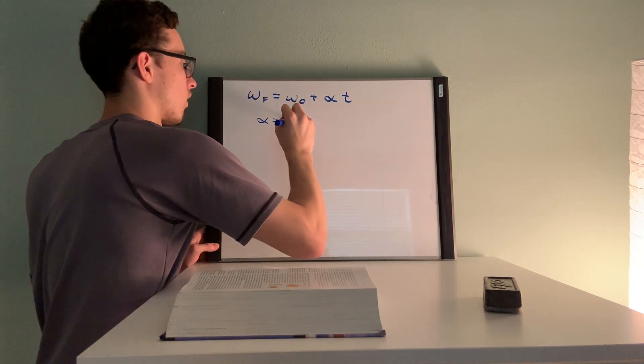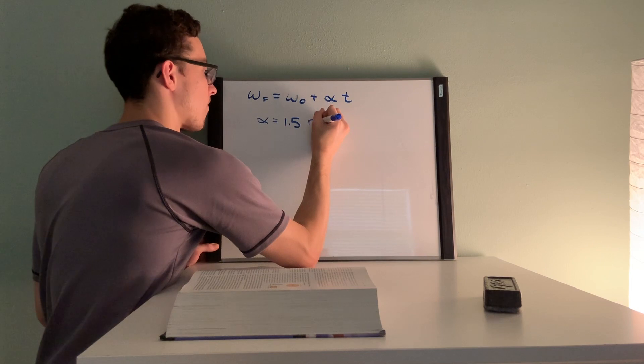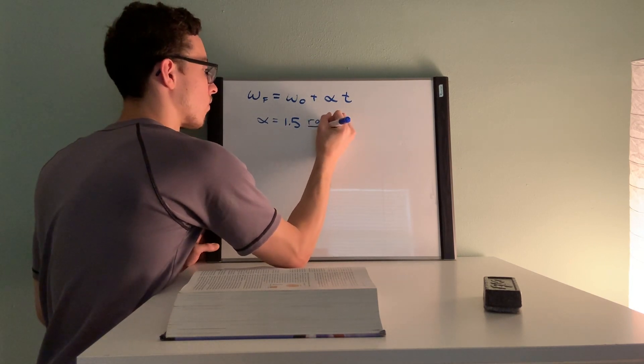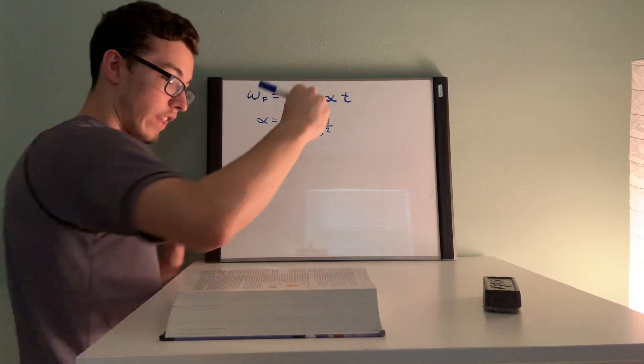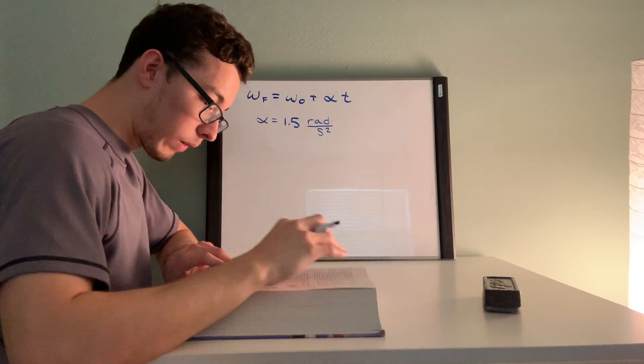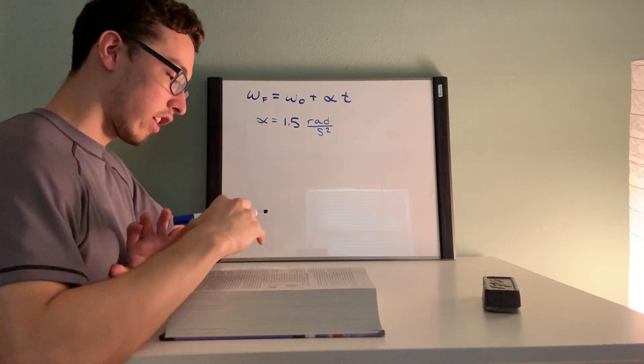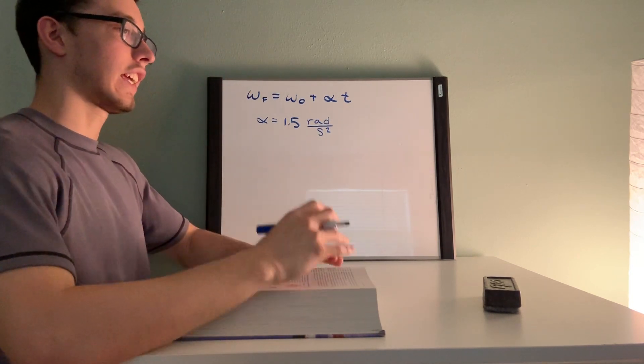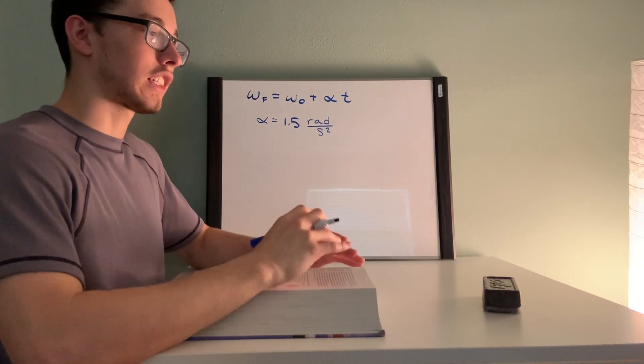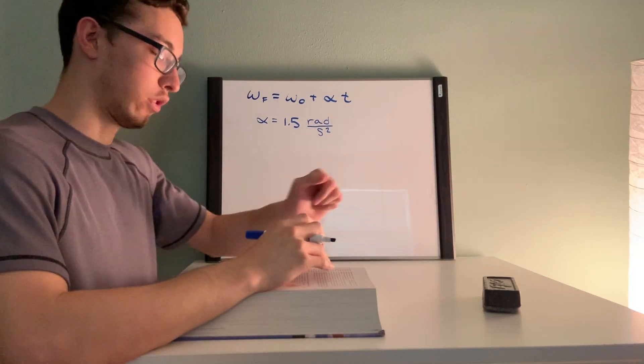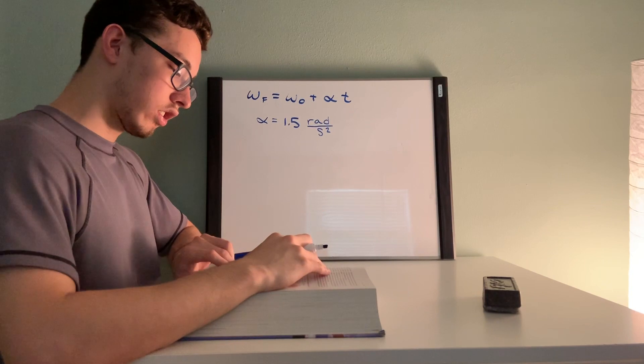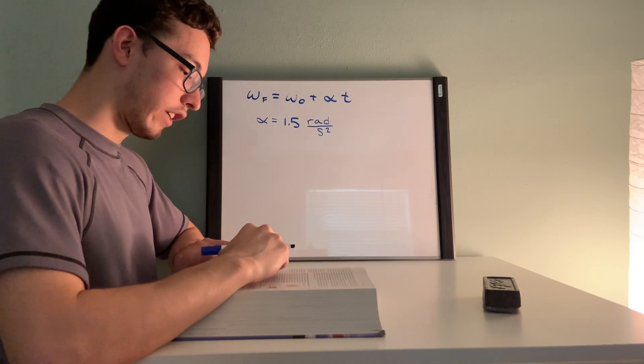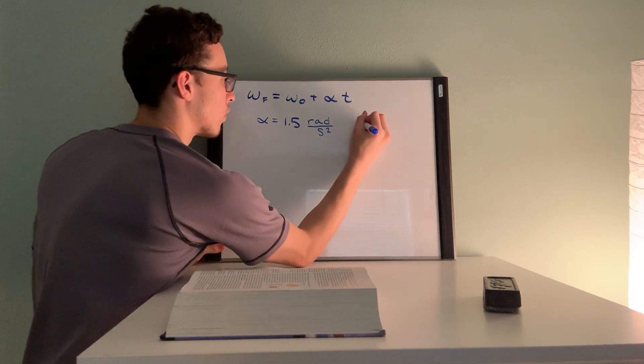Next, how much time does it take to reach an angular velocity? So they're saying after a certain amount of time has elapsed, I'm giving you a final value of 36. So our final angular velocity is equal to 36 radians per second.